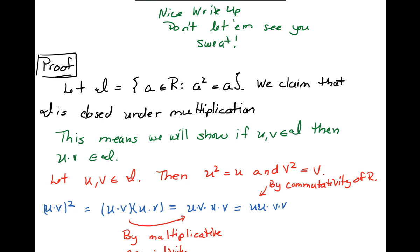Then I can rearrange the order by commutativity, and by the fact that u squared is u and v squared is v, I get uv.